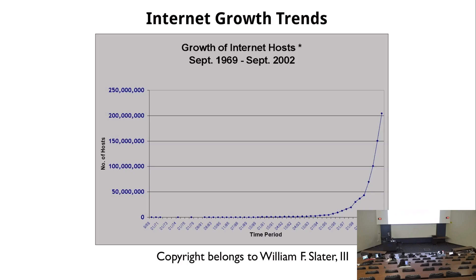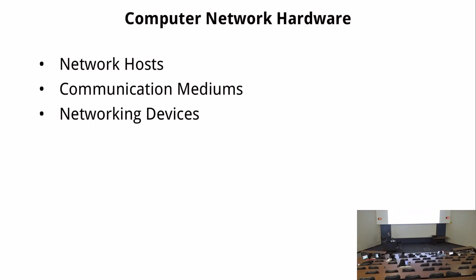We have all kinds of low-end devices connected to the internet — we call them the Internet of Things. For any computer network, there are three major hardware parts: the network hosts (end devices), communication mediums, and networking devices that help hosts connect to each other using those communication mediums.